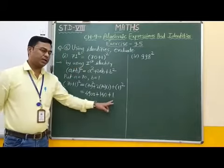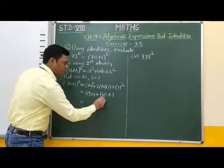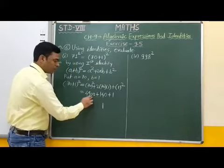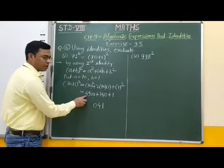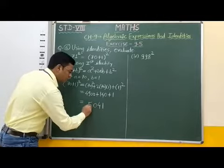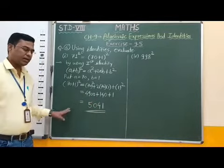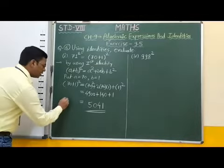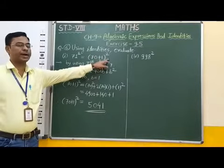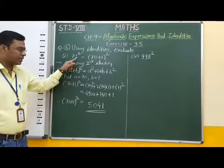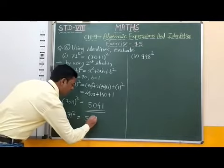Now we have to add these three numbers. We can add horizontally: 1 plus 0 plus 0 equals 1; in the tens place, 4 plus 0 equals 4; then 1 plus 9 equals 10, carry 1; 1000 plus 4 plus carry 1 equals 5. Therefore the answer is 5041. So 70 plus 1, whole bracket squared equals 5041. But 70 plus 1, whole bracket squared equals 71 squared. Therefore 71 squared is equal to 5041.